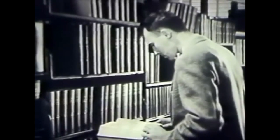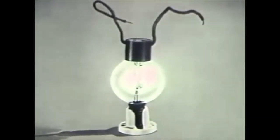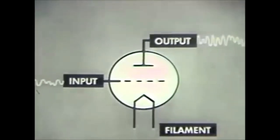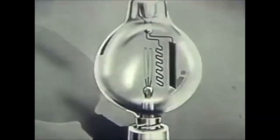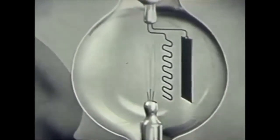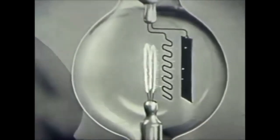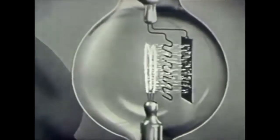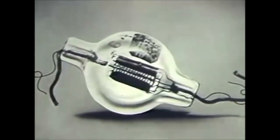To grasp the importance of these new members of the electronic family, let's recall the wonders made possible by the high vacuum tube. The roots of the electronic age reach back to 1907, when Dr. Lee DeForest discovered that a grid of fine wire placed between a filament and a metal plate in a vacuum tube could control electron flow and amplify electrical waves — he called this amplifying tube an audion. Working independently, Dr. Arnold of Bell Telephone Laboratories and Dr. Langmuir of General Electric found that pumping out the audion to create a very high vacuum gave greater fidelity and stability.